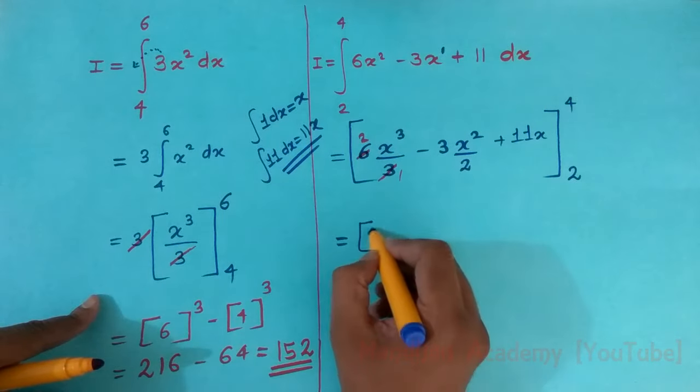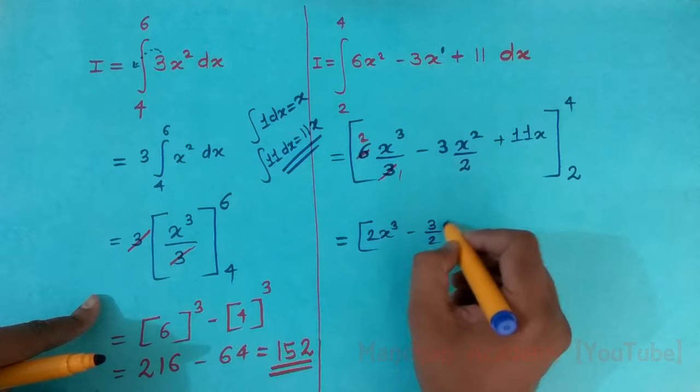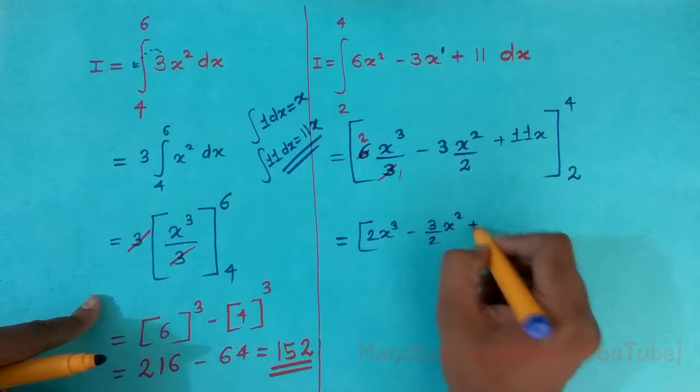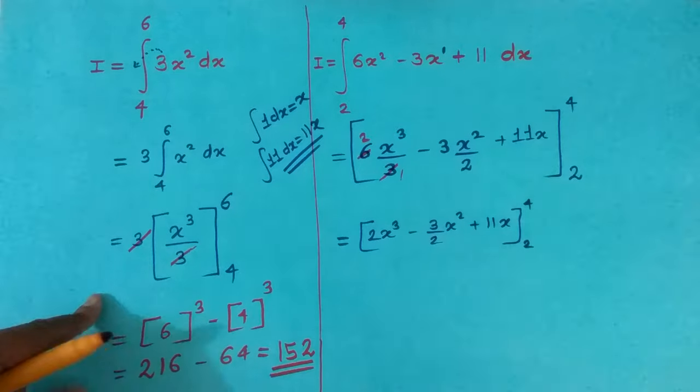Let's rewrite the function. 2 x cube minus 3 by 2 x square plus 11x and the range is 2 to 4.